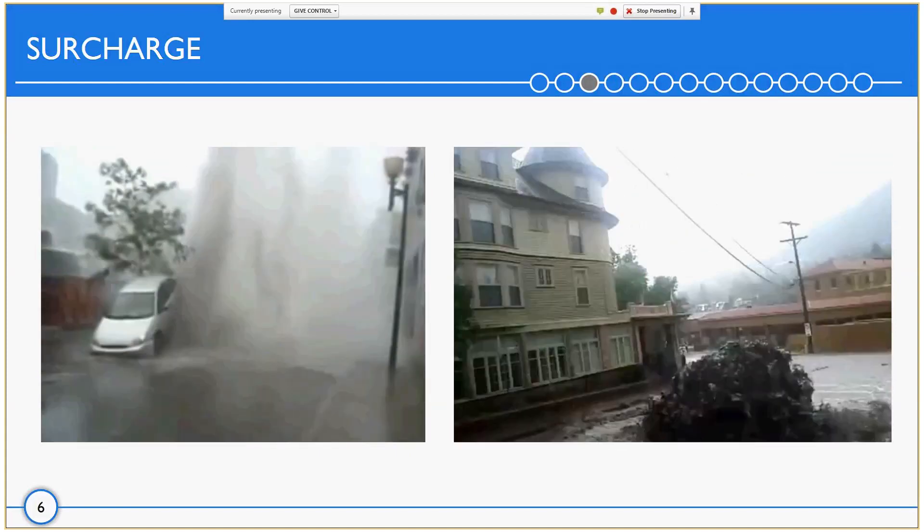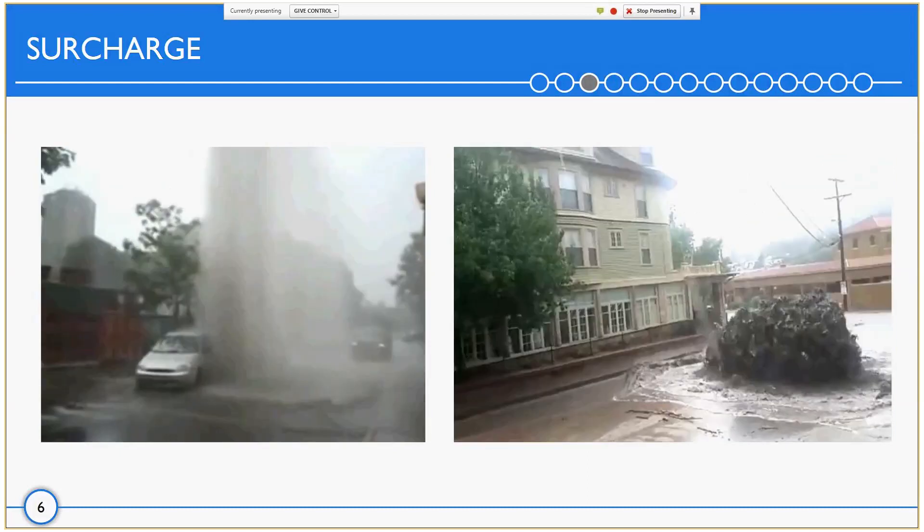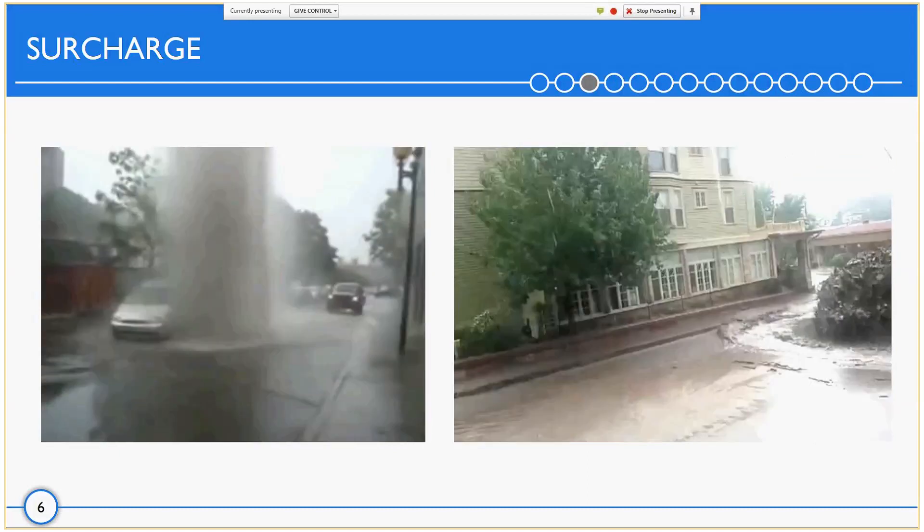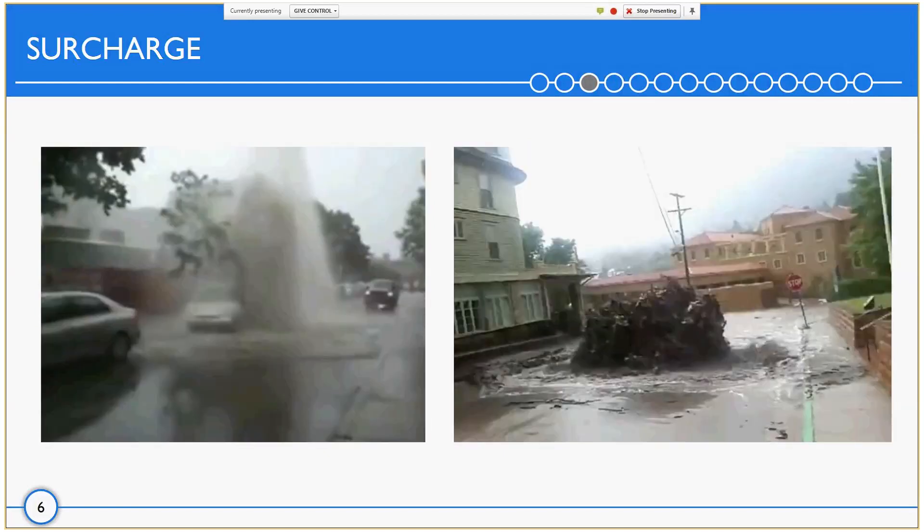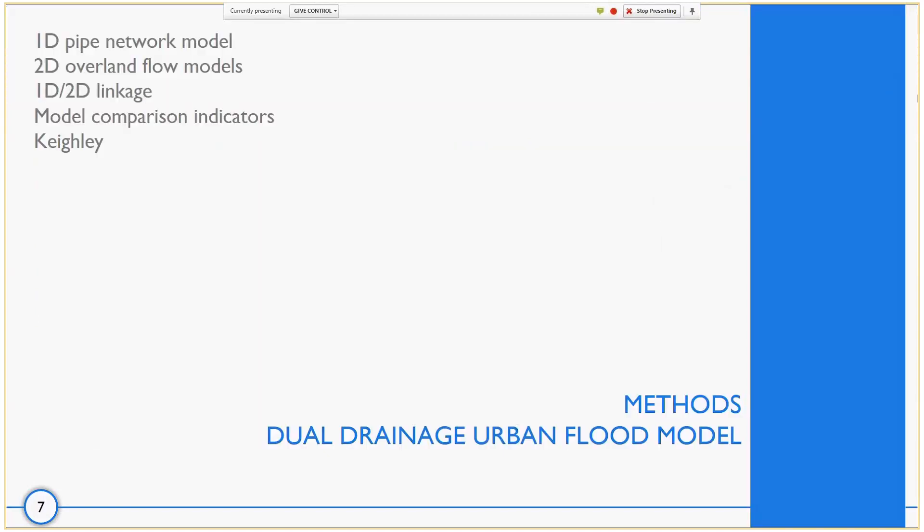So, the question is, what can we do? How can we predict these events to minimize their effect? Since I am a modeler, I have to say that creating better and more accurate models capable of replicating these events is the solution. This can be achieved by having a 1D sewer model, a 2D overland flow model, and a good linkage model.